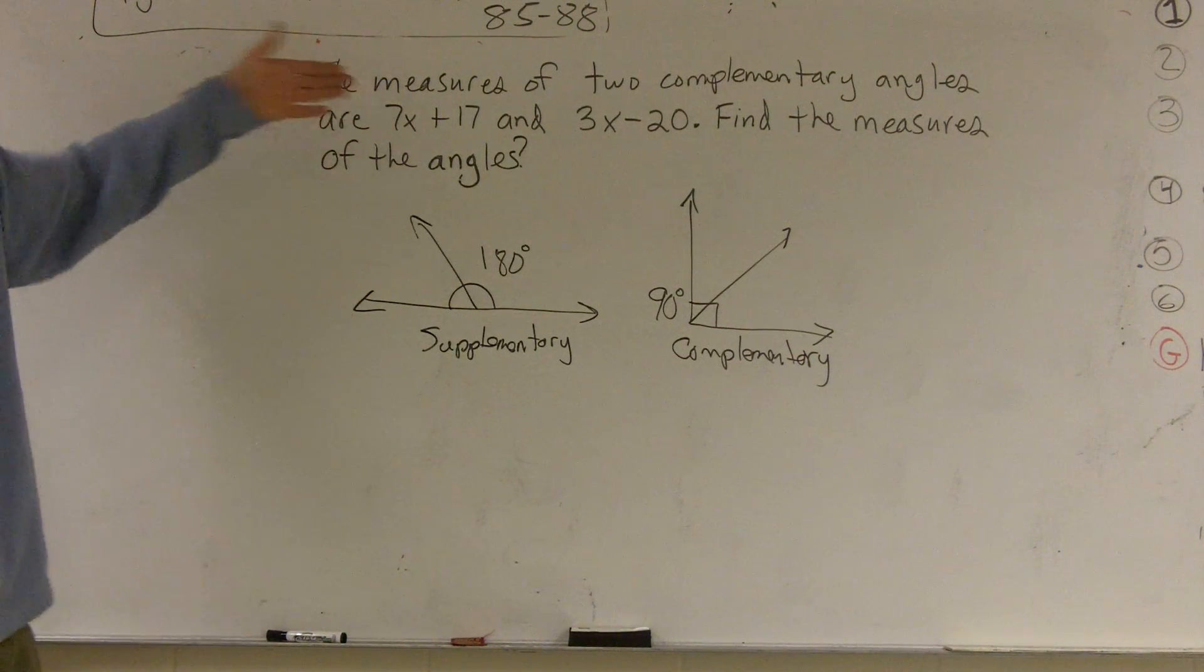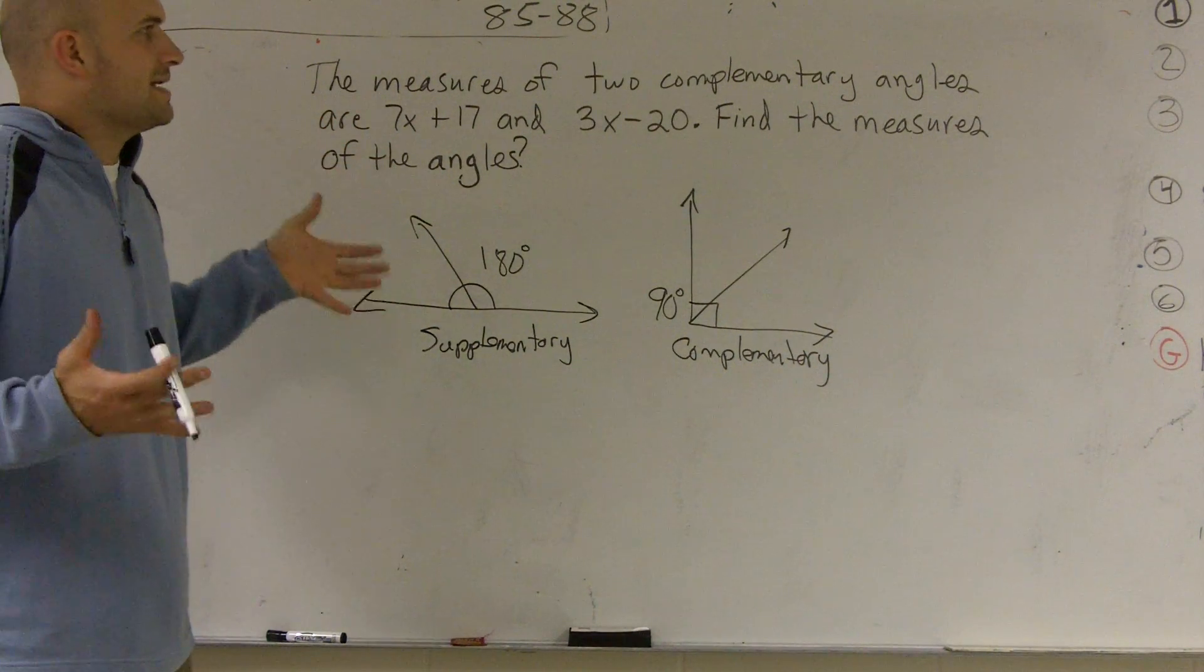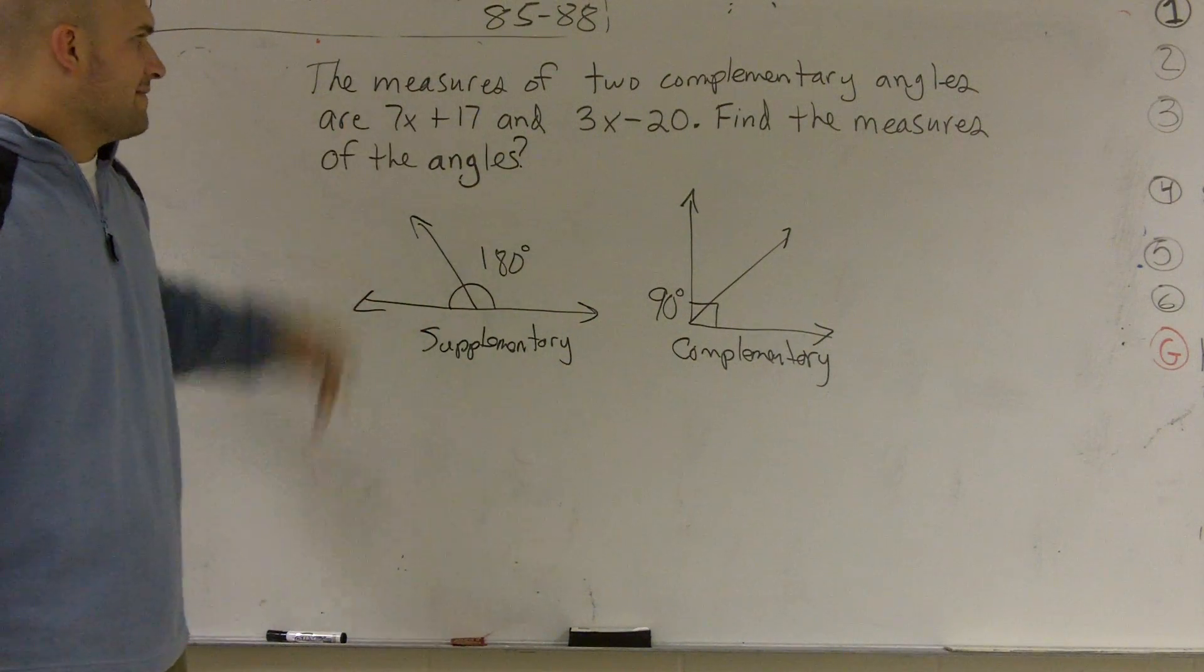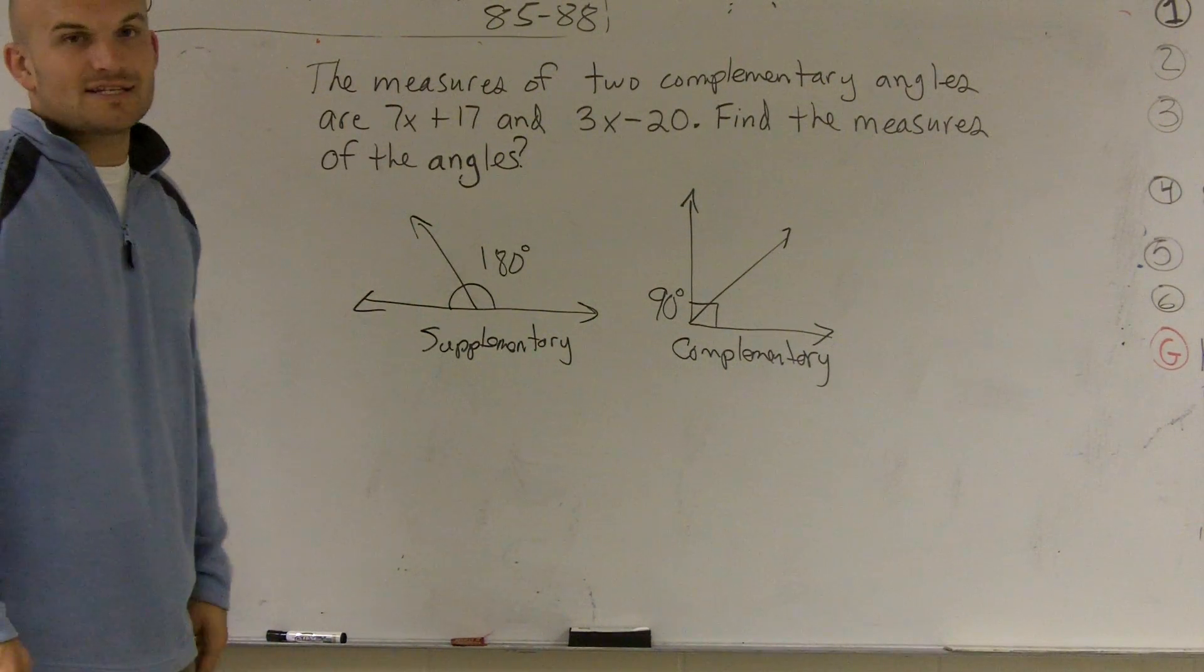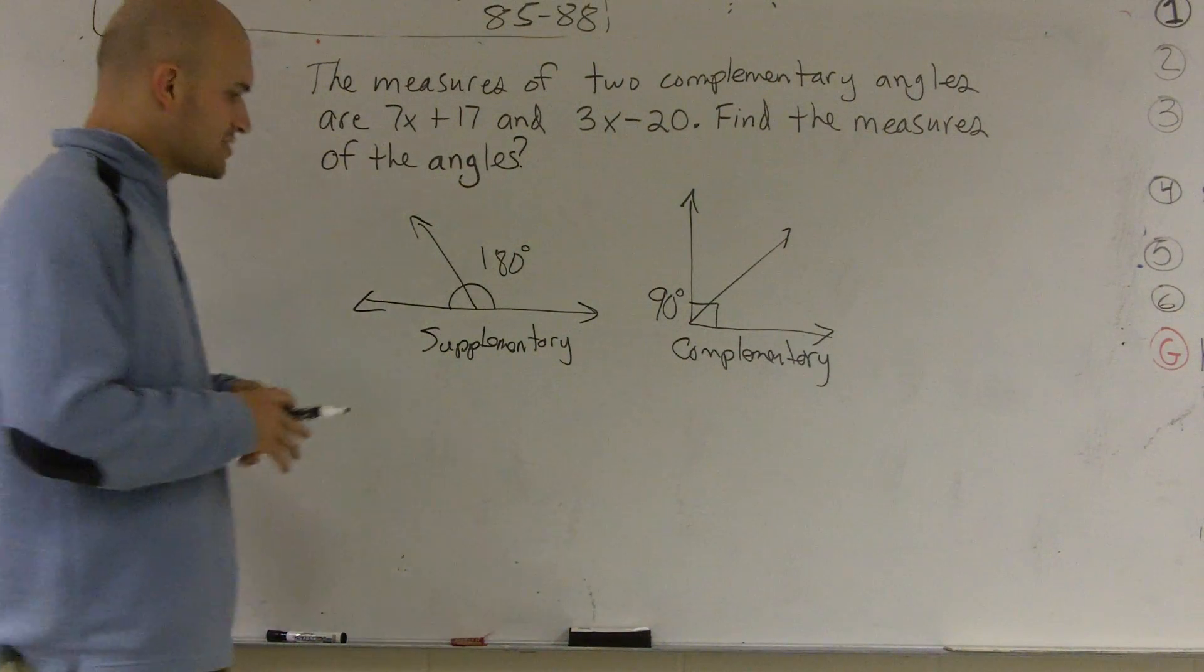So what they're saying is we have two complementary angles. That means they make up 90 degrees. So we have 7x plus 17 and 3x minus 20, and they're going to add up to equal 90 degrees. So we need to find the measures of the angle.